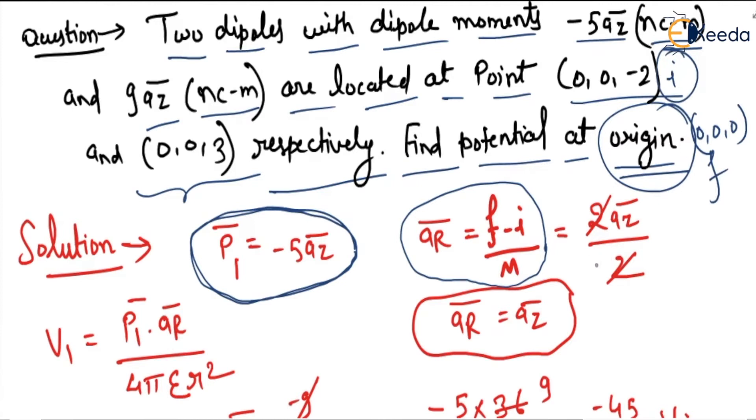It will be 2az divided by magnitude 2, so these cancel, and ar vector equals az.